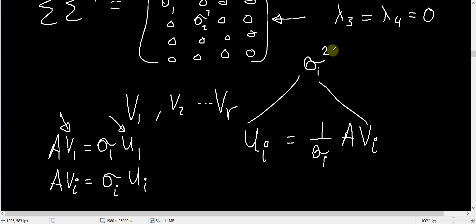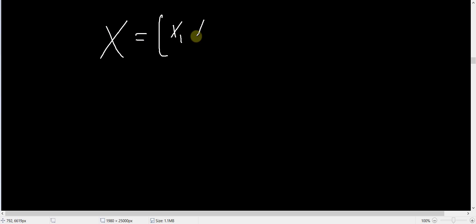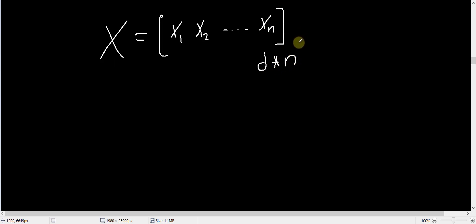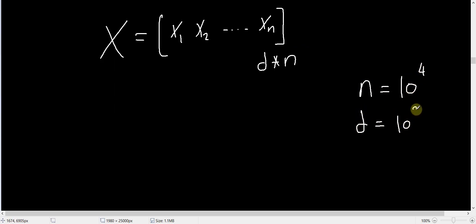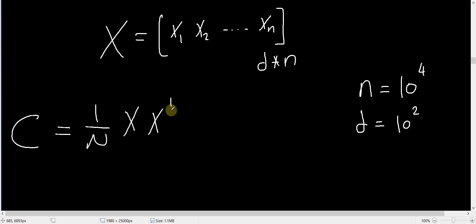Now why is this important? In some machine learning applications, you are faced with the covariance matrix. If you have a data matrix X with columns X₁, X₂, up to X_n, its dimension will be d by n. In general, you want n to be much larger than d — the number of examples much larger than the number of dimensions. Suppose n equals 10⁴ and d equals 10². Then the covariance matrix C equals (1/n) X X^T, assuming centered data, and has dimension d by d.